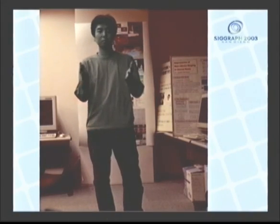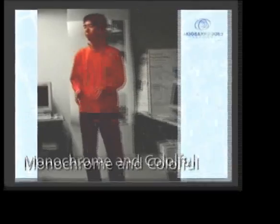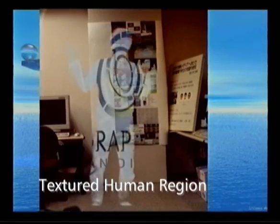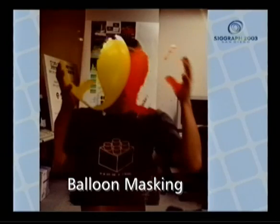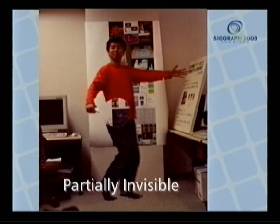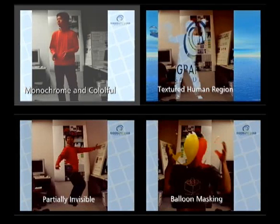Only yourself is monochrome or colorful. A textured human region, balloon masking, and becoming partially invisible. How are these visual effects possible?